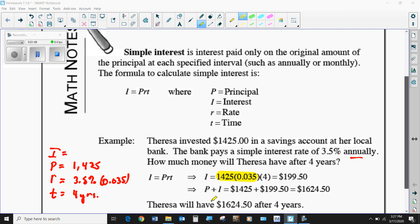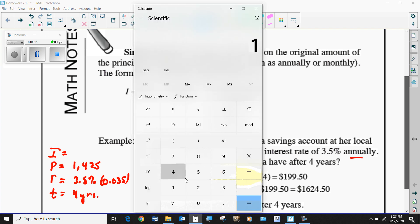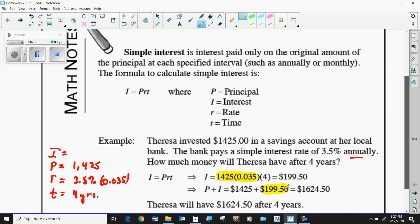I'm going to use the calculator function: 1,425 times 0.035. It turns out it's $49.88 if you round it up per year, but this covers all four years, so that number times four. Multiply all three of these numbers together, and that amount is going to be the amount of the interest. If they want to find out what the new amount is, you'll have to add that to the original amount that you deposited for a total of $1,624.50.